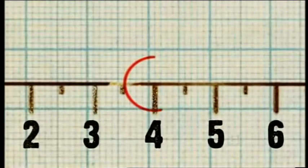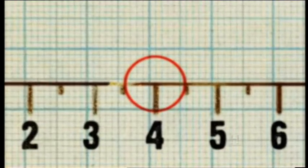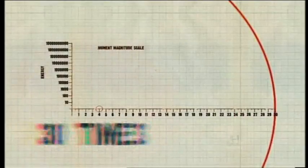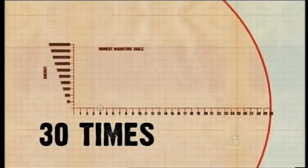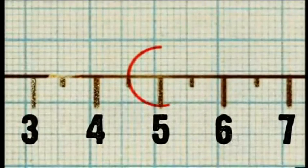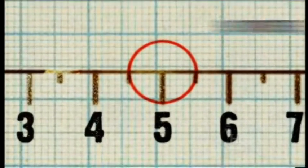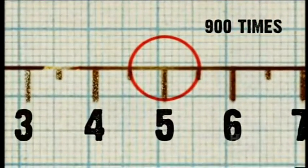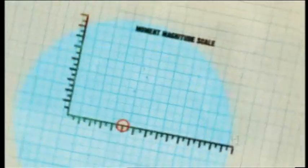For example, a magnitude 4.0 quake is about 30 times more powerful than a 3.0, and a magnitude 5.0 quake is about 900 times more powerful than that same 3.0 quake.